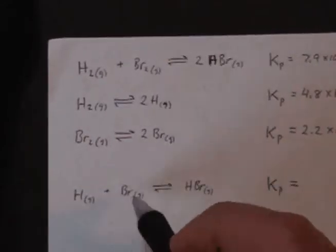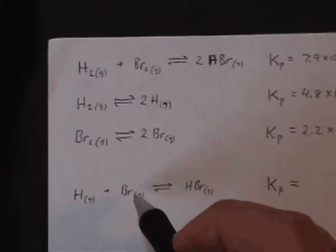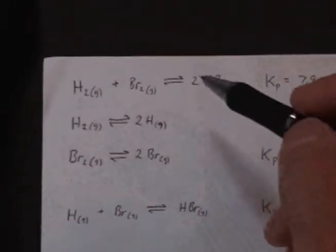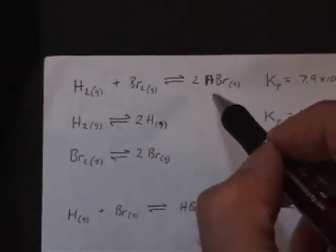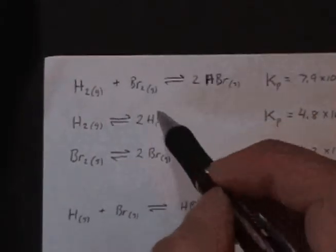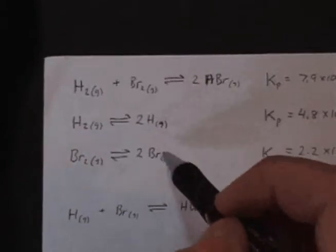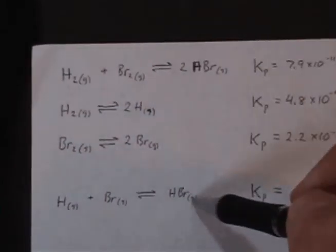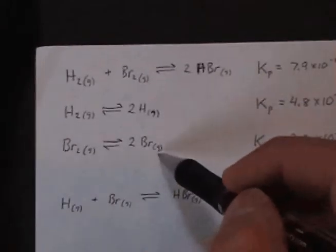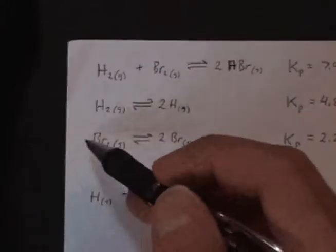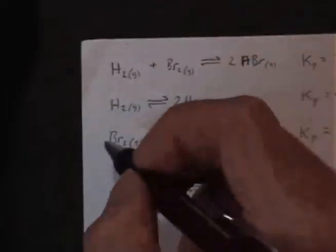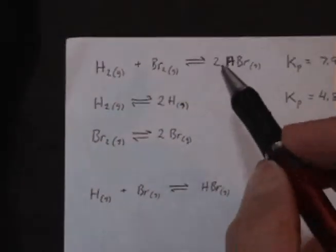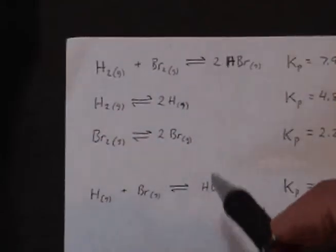Alright, so we see we have the atoms as reactants and we're forming HBr. Okay, so here's our HBr, it's as a product. Here are the atoms, they're shown as products. Okay, so the HBr we want as a product but the atoms we want as reactants. So that means we need to flip these ones around. Okay, and then we'll also have to address the coefficients.